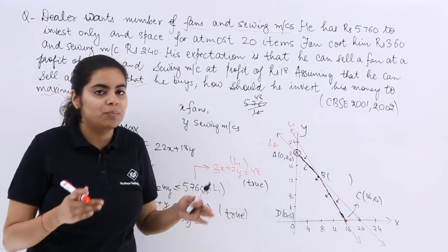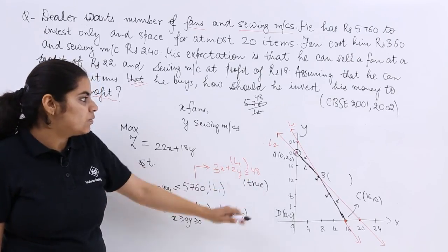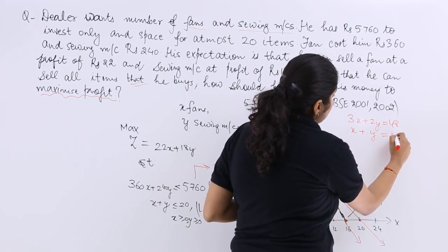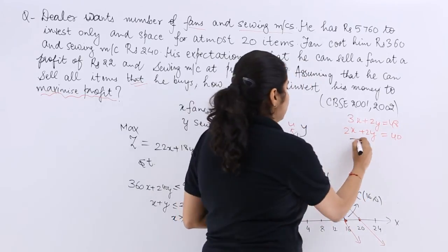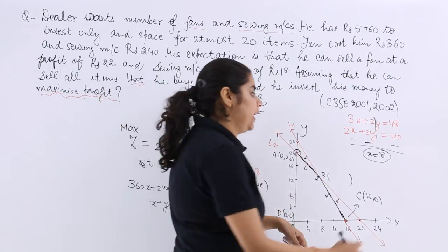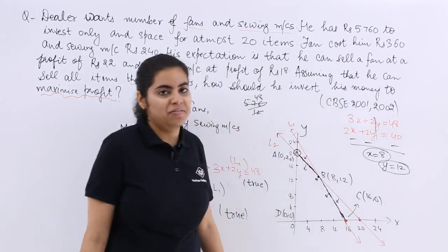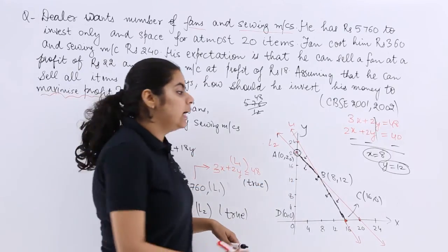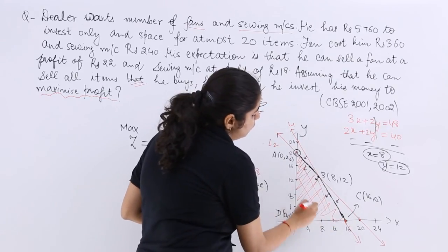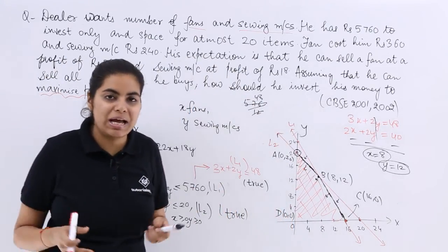To find point B, I solve the two equations simultaneously: 3x + 2y = 48 and x + y = 20. Multiplying the second equation by 2 gives 2x + 2y = 40. Subtracting from the first: x = 8. Substituting back: y = 12. So B = (8, 12). The required feasible region is the shaded area, and we must find the maximum value of Z in this region.